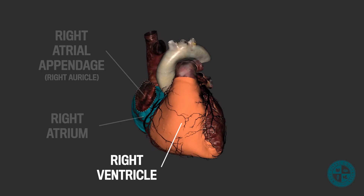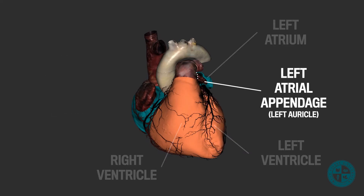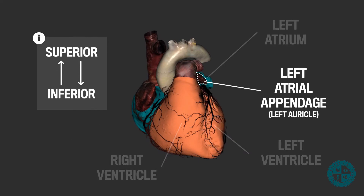The left border of the heart is formed by a small portion of the left atrium and the left ventricle. Again, we can make out the left atrial appendage. Then the inferior border of the heart is formed by the inferior wall of the right ventricle.